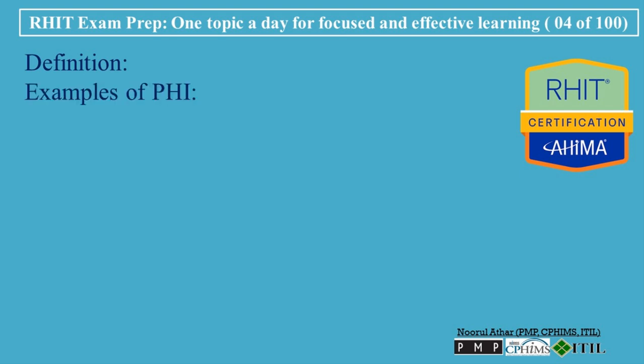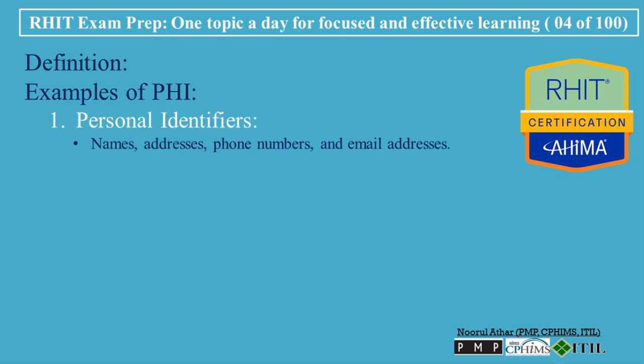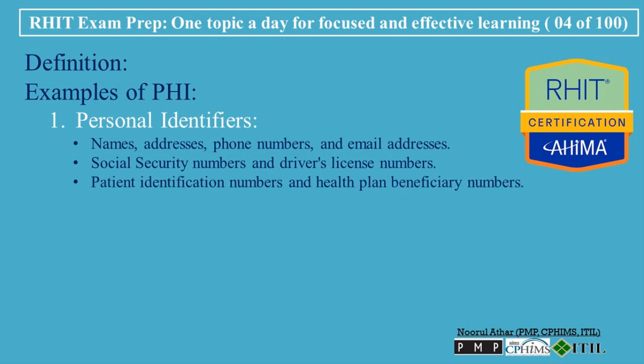Examples of PHI. 1. Personal Identifiers: Names, addresses, phone numbers, and email addresses; Social Security numbers and driver's license numbers; Patient Identification numbers and Health Plan Beneficiary numbers.